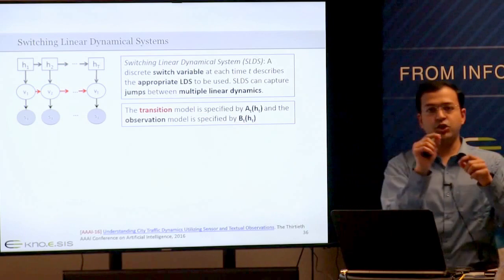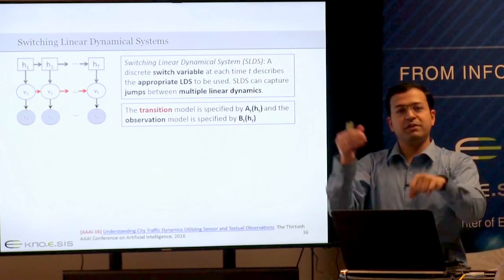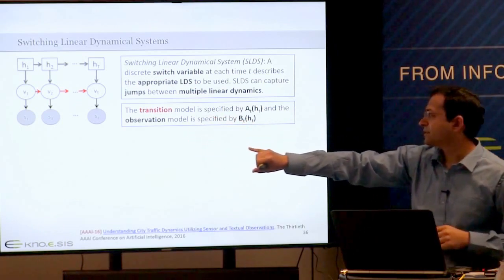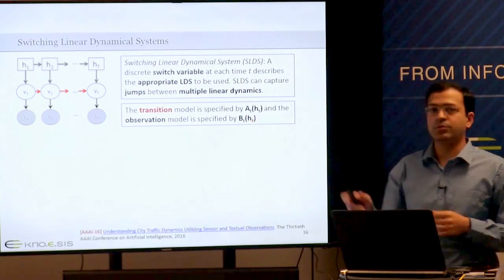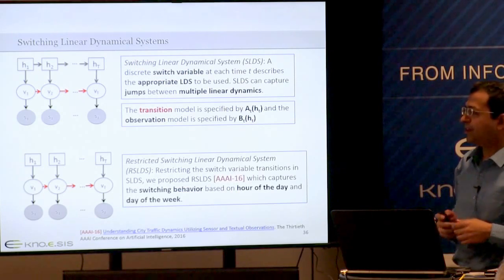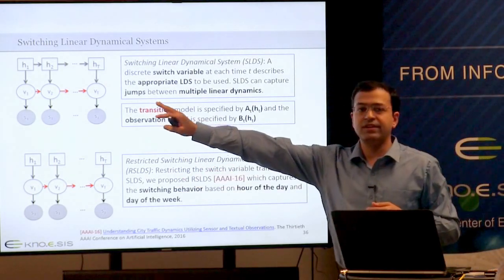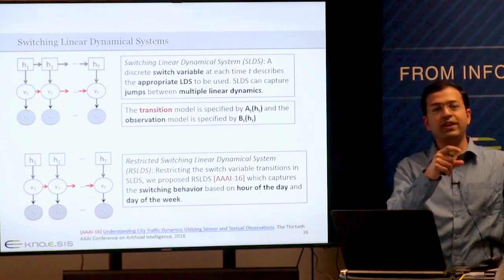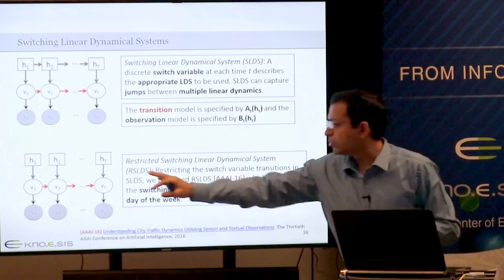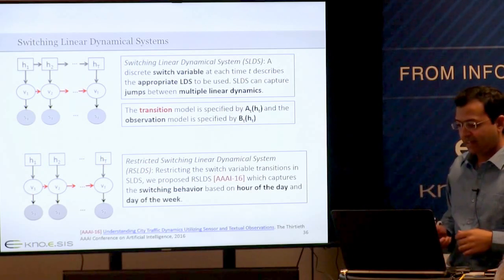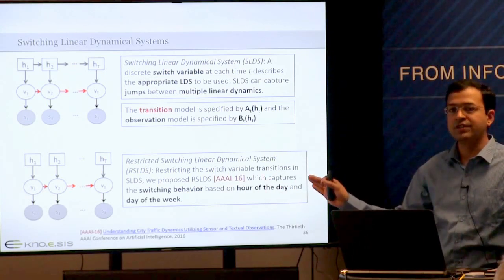A switching linear dynamical system has a discrete switch that chooses a particular linear dynamics. Depending on the switch variable, you choose the linear dynamics for that time and keep switching between different linear regimes. We proposed restricted switching linear dynamical systems (RSLDS), presented at AAAI 2016. We removed the Markovian transition on the switch because for our problem, the switch is day of week and hour of day—there is nothing uncertain about it. Given any data point, we know when it was generated, what day of week and hour of day it is.